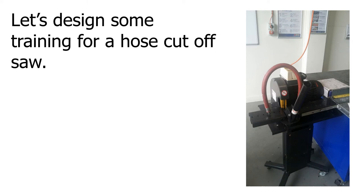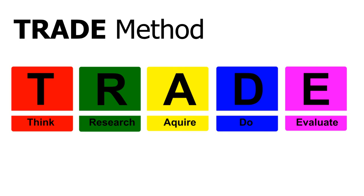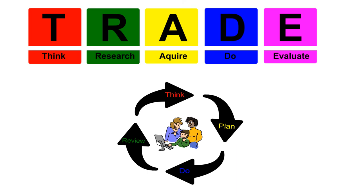Let's design some training for a hose cutoff saw. In this example, we want to be able to grab anyone from the street or office and train them on using the hose cutoff saw. I'm going to introduce the TRADE method. It's very similar to the Pertech Work Smart method but with an extra step — instead of Think, Plan, Do, Review, it's Think, Research, Acquire, Do, and Evaluate.